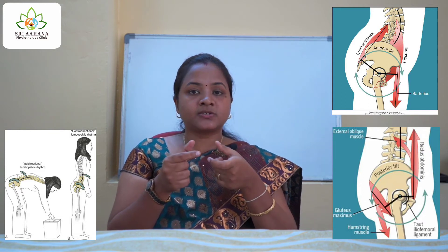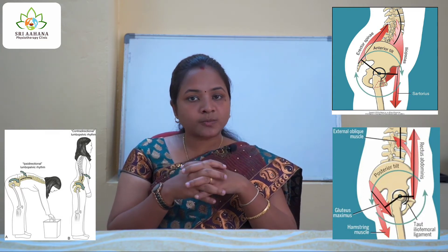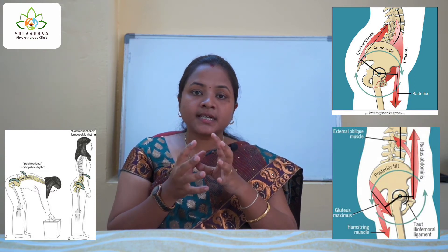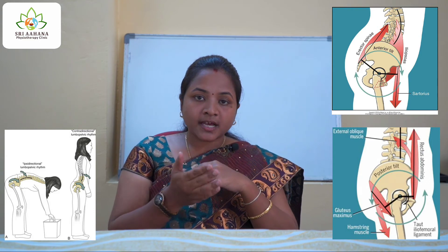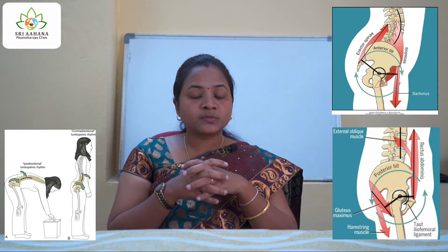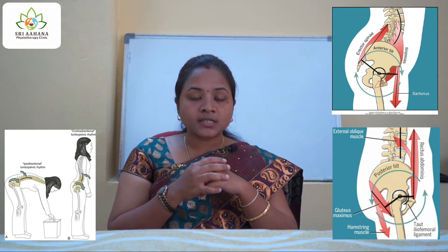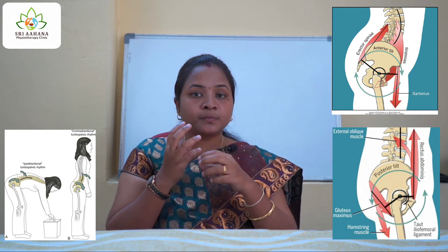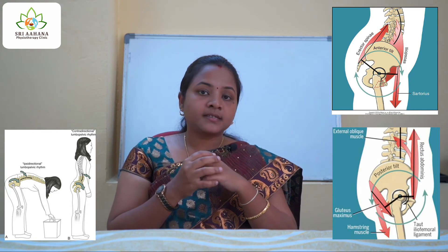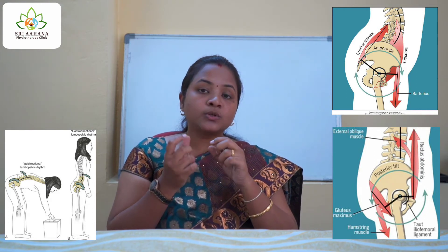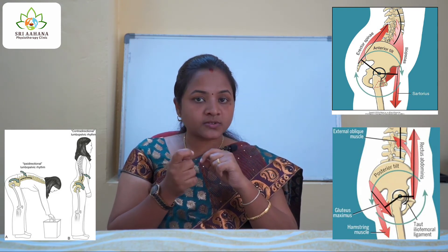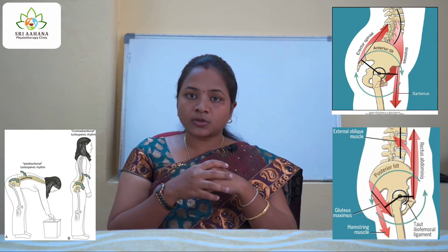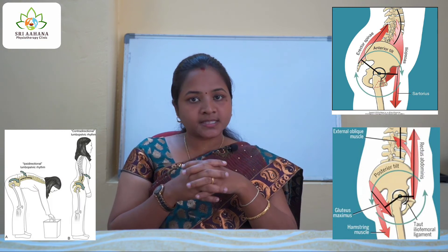This posterior pelvic tilting happens until the erector spinae takes up the role of bringing spine extension back to neutral position. The key point here is that the contraction of the hamstrings and gluteus maximus has a higher torque than the spine extensor muscles. This is why the spine extensors will not be put under too much stress in returning the spine to neutral, because half the work is already done by the hip extensor muscles.